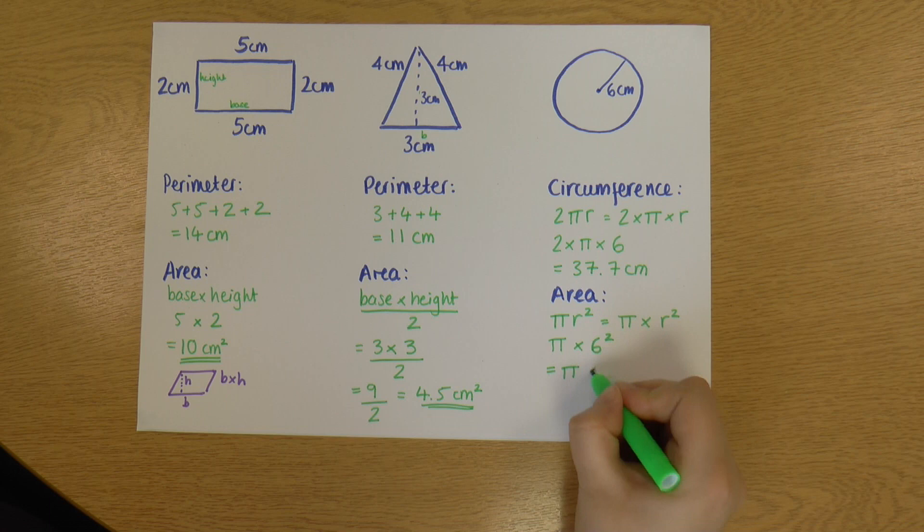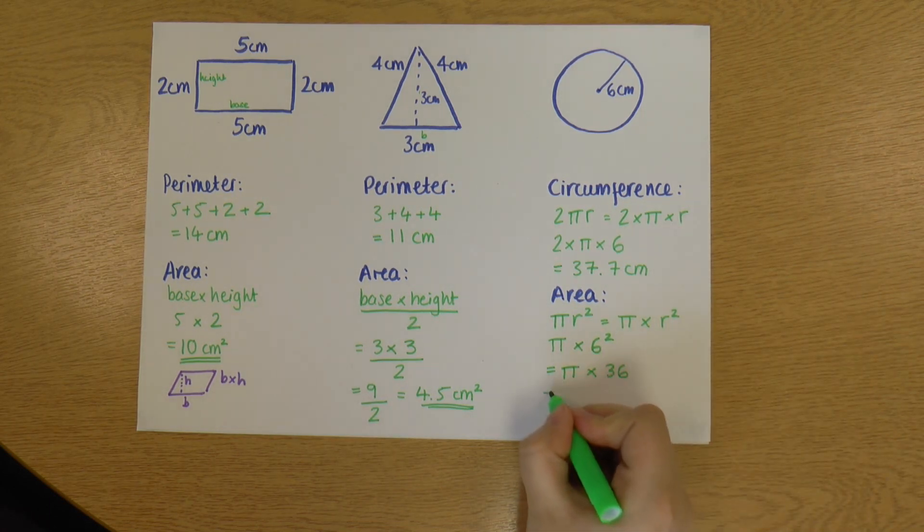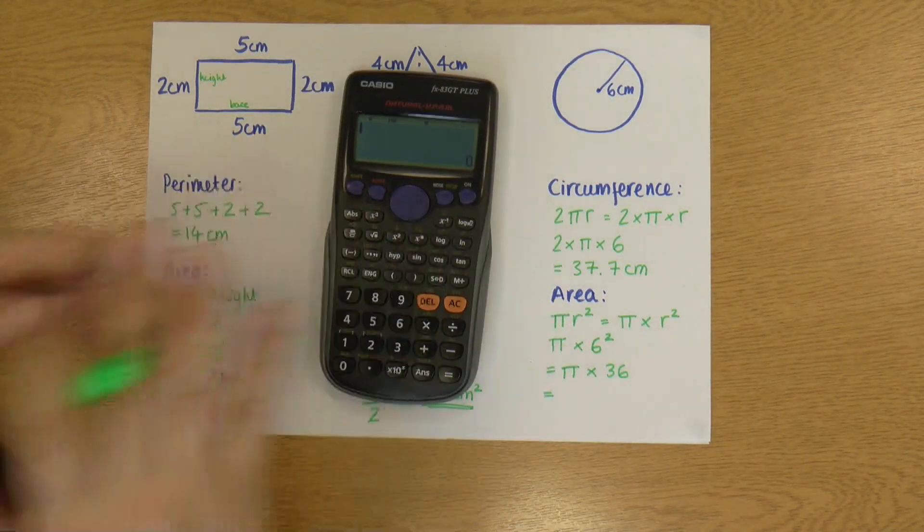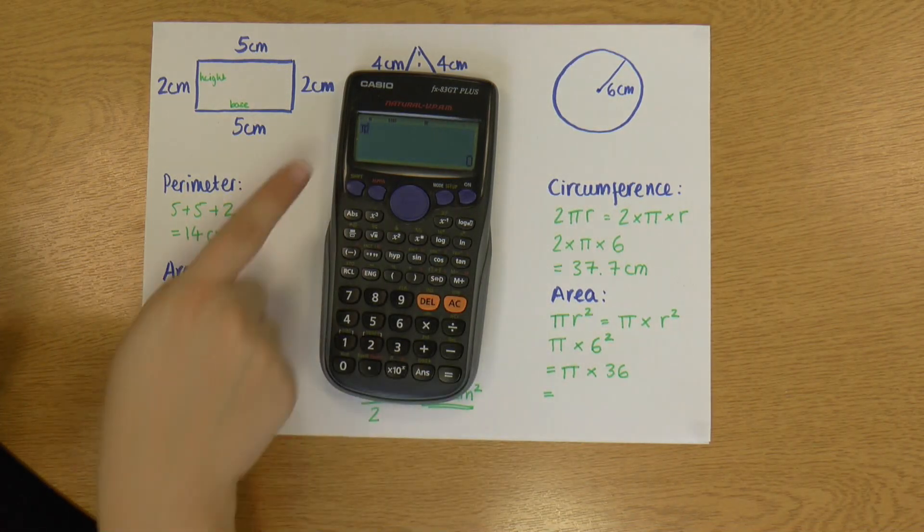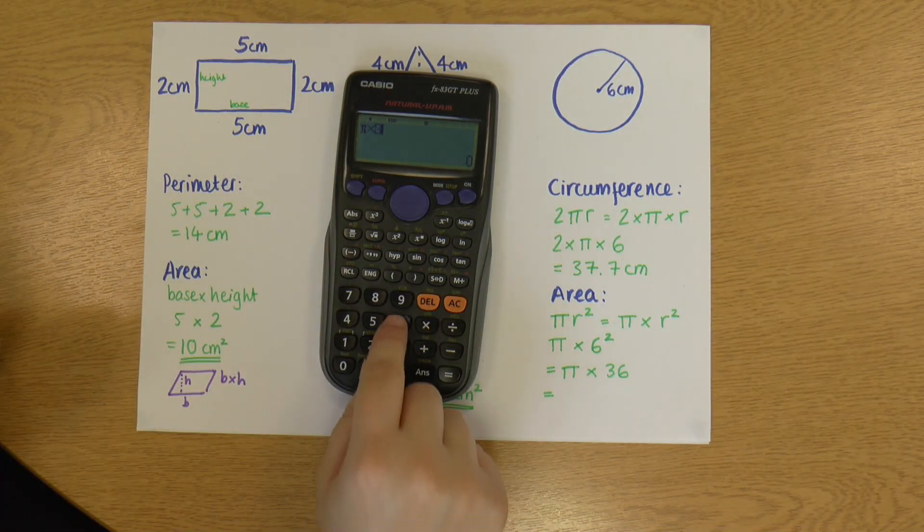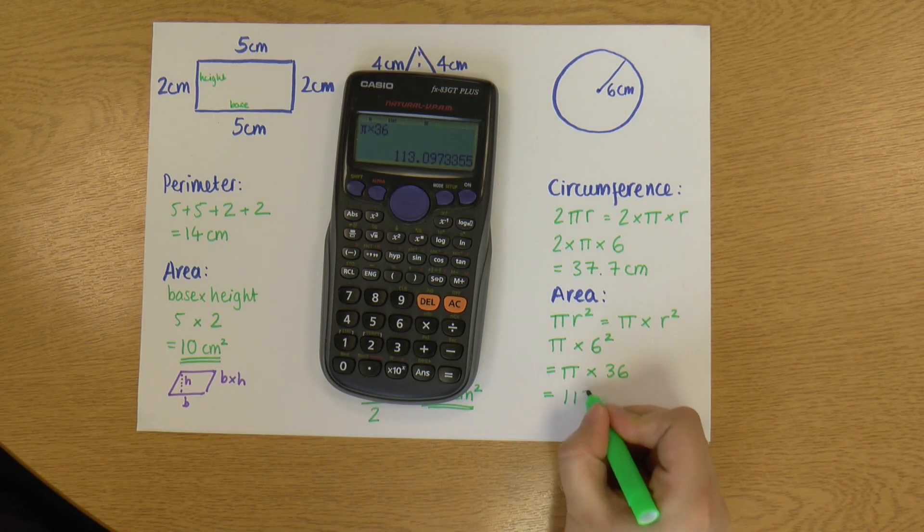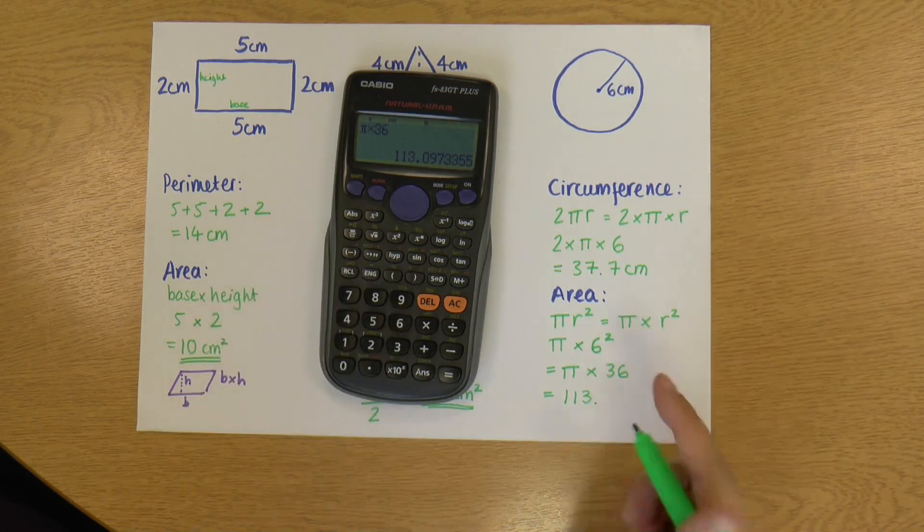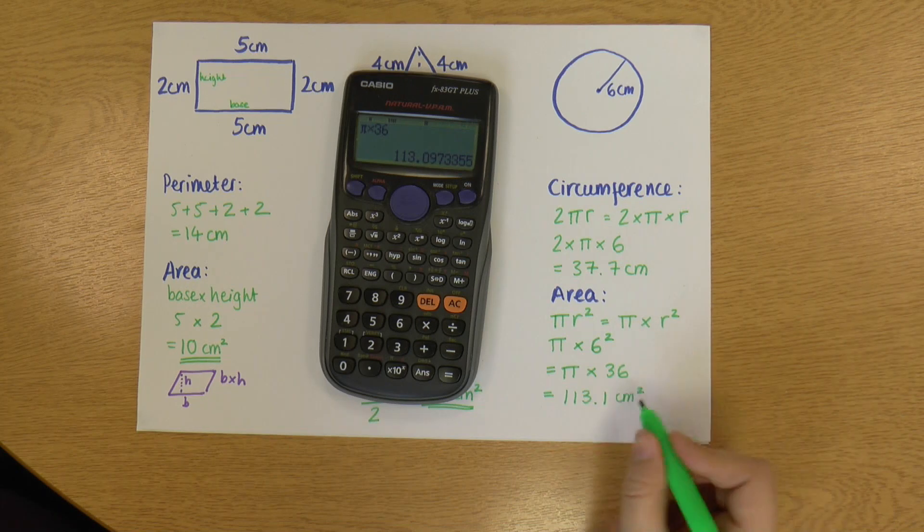So I'm going to do my six squared first. So 6 squared is 36. And so I've got π times 36. I'm going to grab my calculator again. And I'm going to go shift π. So now I've got π times 36, and that gives me 113. And I'm just going to round this to 113.1. And again, it's centimeters squared.